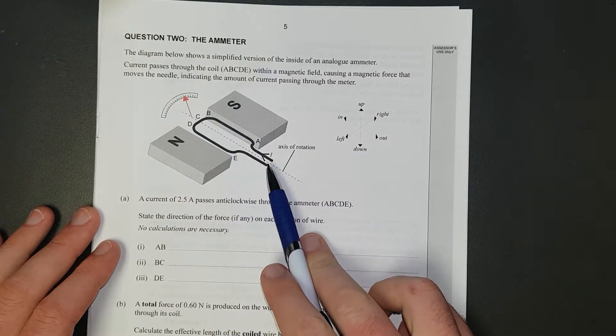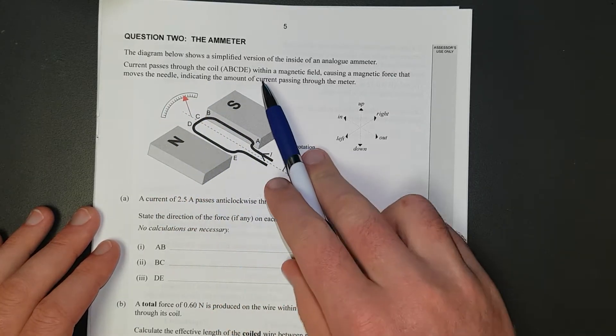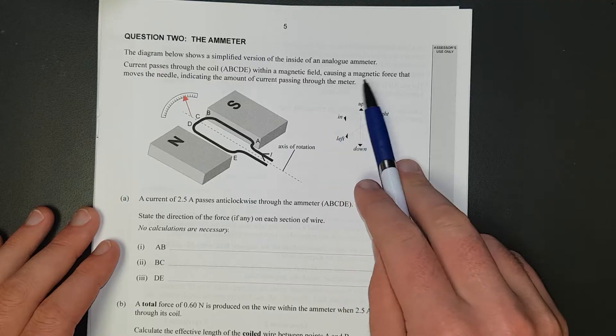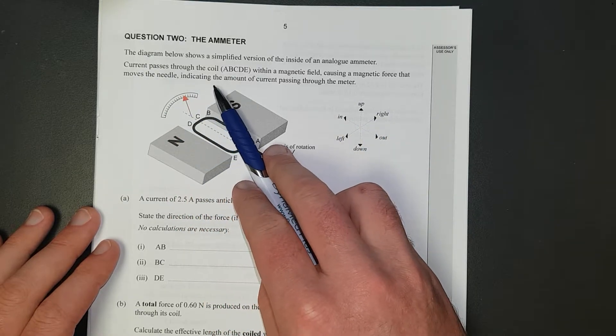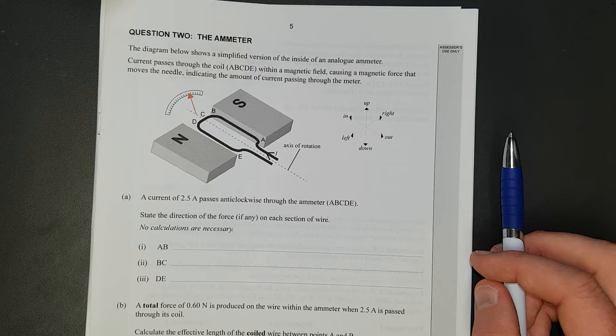Current passes through the coil, A, B, C, D, E, within a magnetic field, there's your magnet, causing a magnetic force that moves the needle. Indicating the amount of current that's passing through the meter.